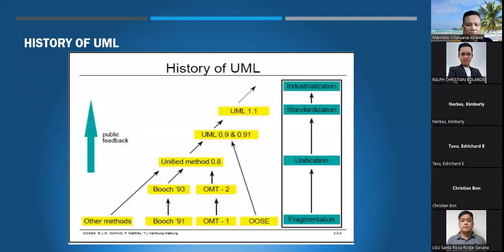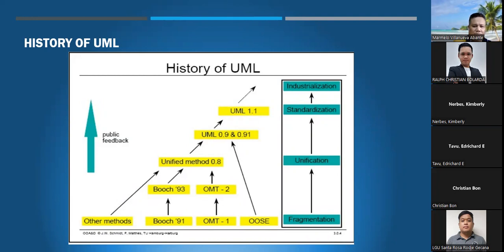The history of UML — as you can see in the graph, from fragmentation to industrialization. UML helps bring together other methods — the Booch method, OMT, the OOSE — coming to unification and then going through standardization and industrialization.